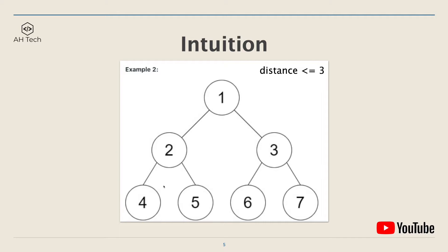Let's visualize this process using example two. We start from the bottom up, beginning at the leaf nodes. Each leaf node returns a list of only one element — the value one — to its parent node. This means there is only one leaf node in the subtree at that point. At node two, we check how many pairs of good leaf nodes exist: there are two leaf nodes, four and five, whose distance is two, which is smaller than three, so we update the result to one.